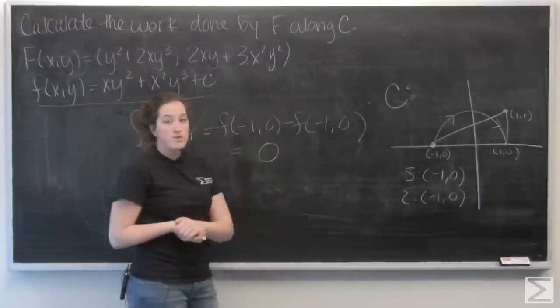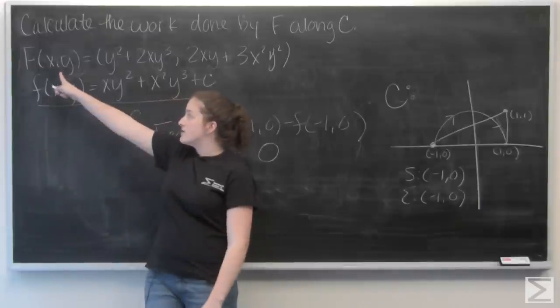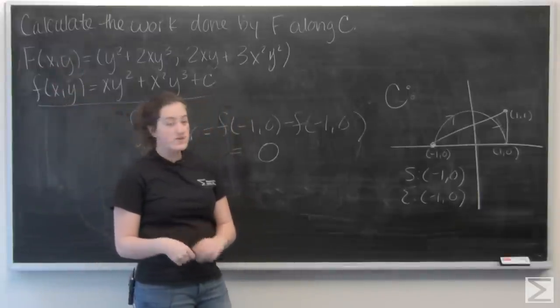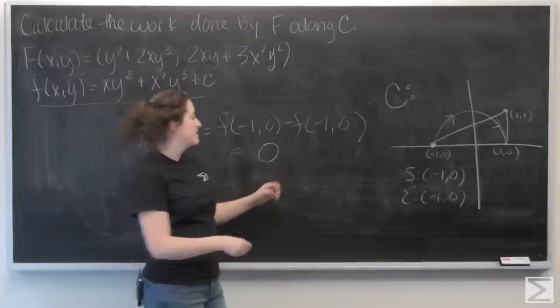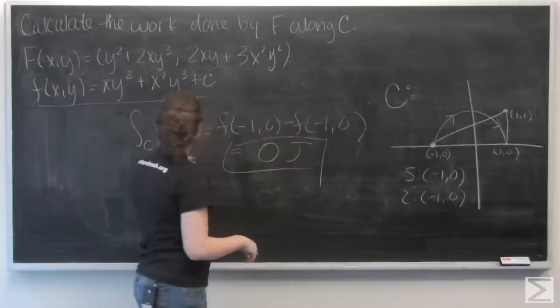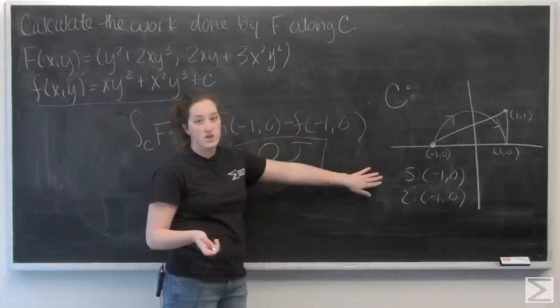And let's assume that f of x, y is a force field given in newtons, and x and y are both measured in meters, so this is actually going to be 0 joules. Meaning that there's actually no work done by f along this curve c.